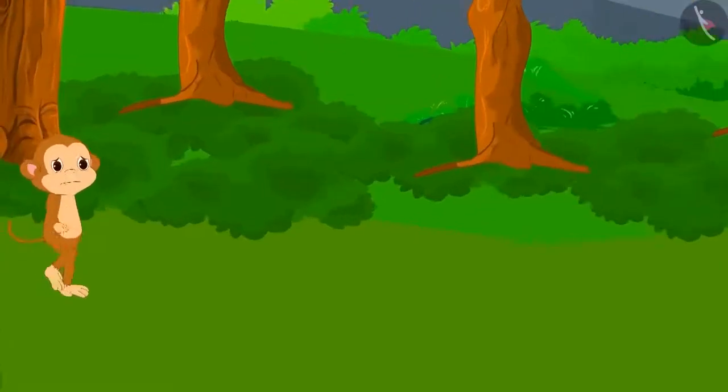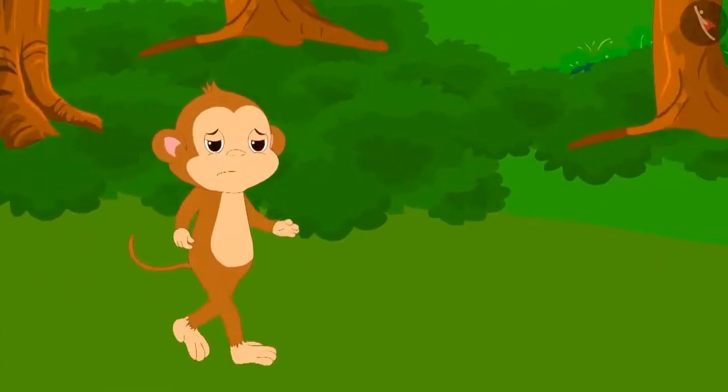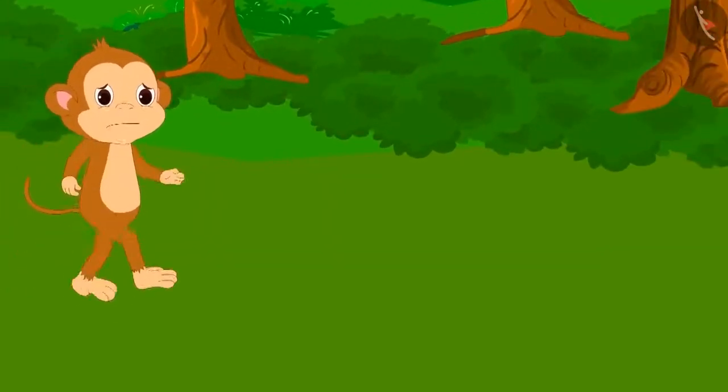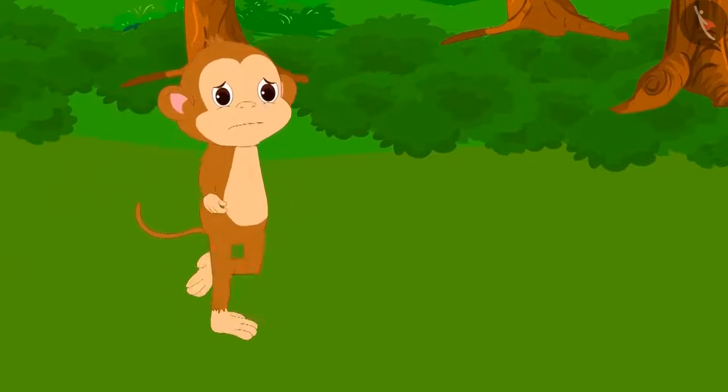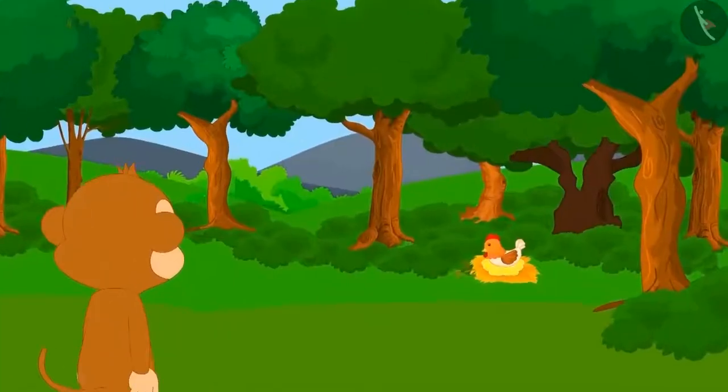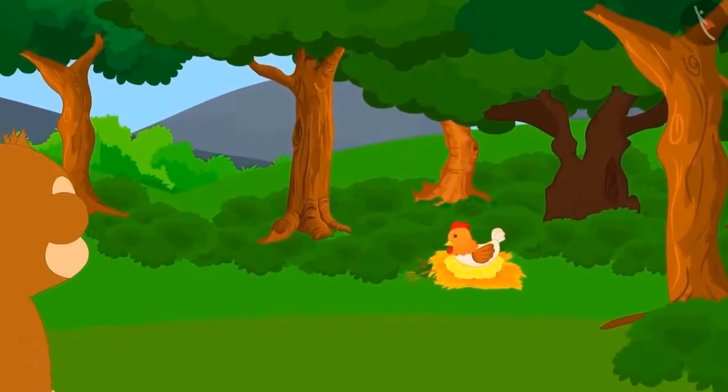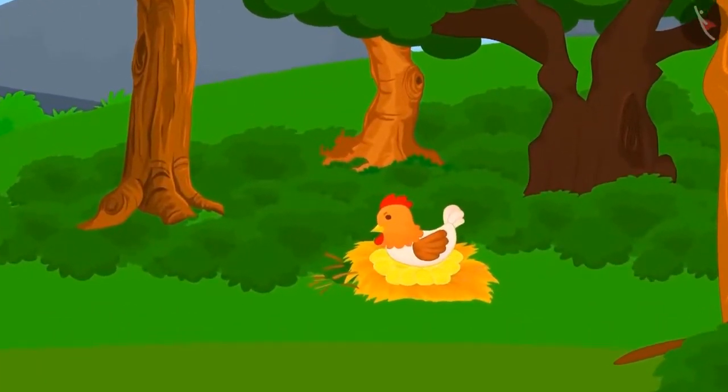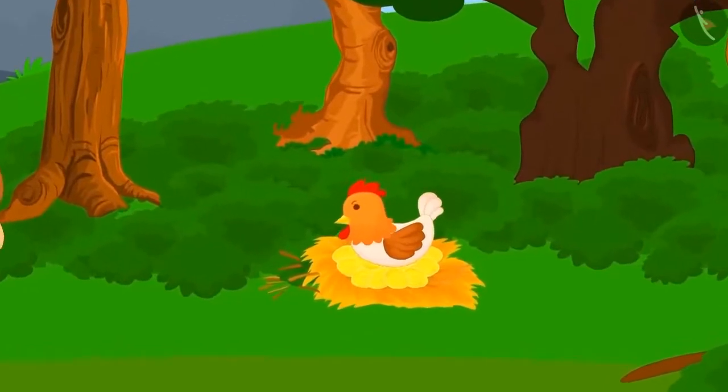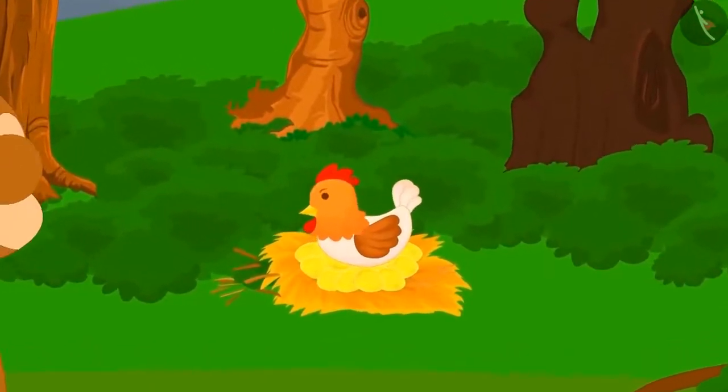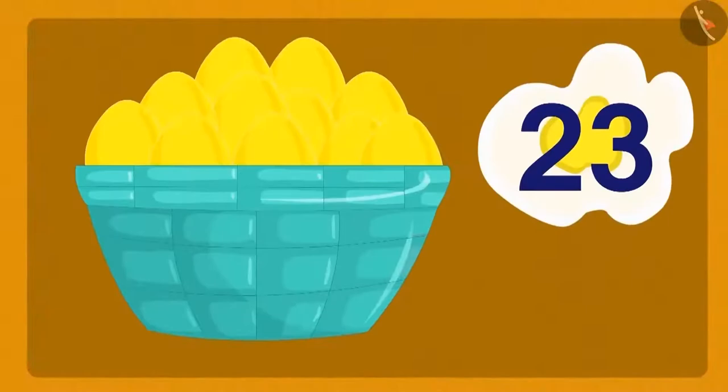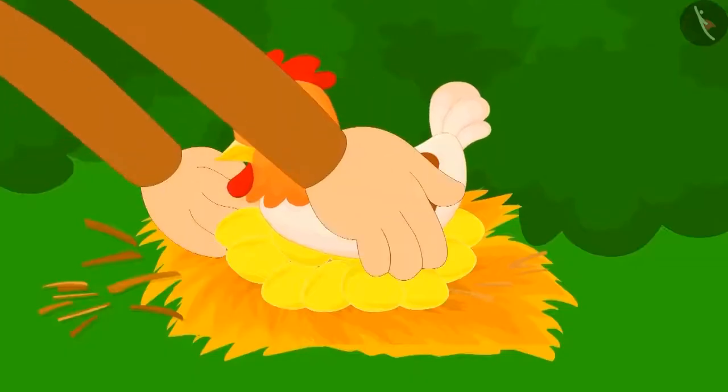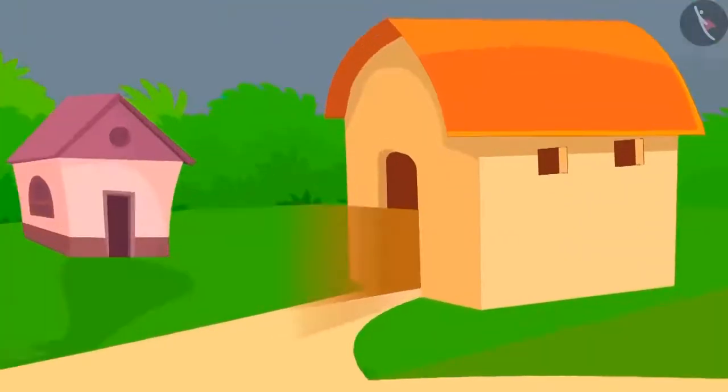One day, Baban was wandering in the forest and regretting how he lost all the three wishes he had got from the genie. Then he saw a hen there, but there was something special about this hen. She was sitting on a pile of golden eggs. There were a total of twenty-three golden eggs. Baban was very happy and he took the hen and all the golden eggs and went home happily.